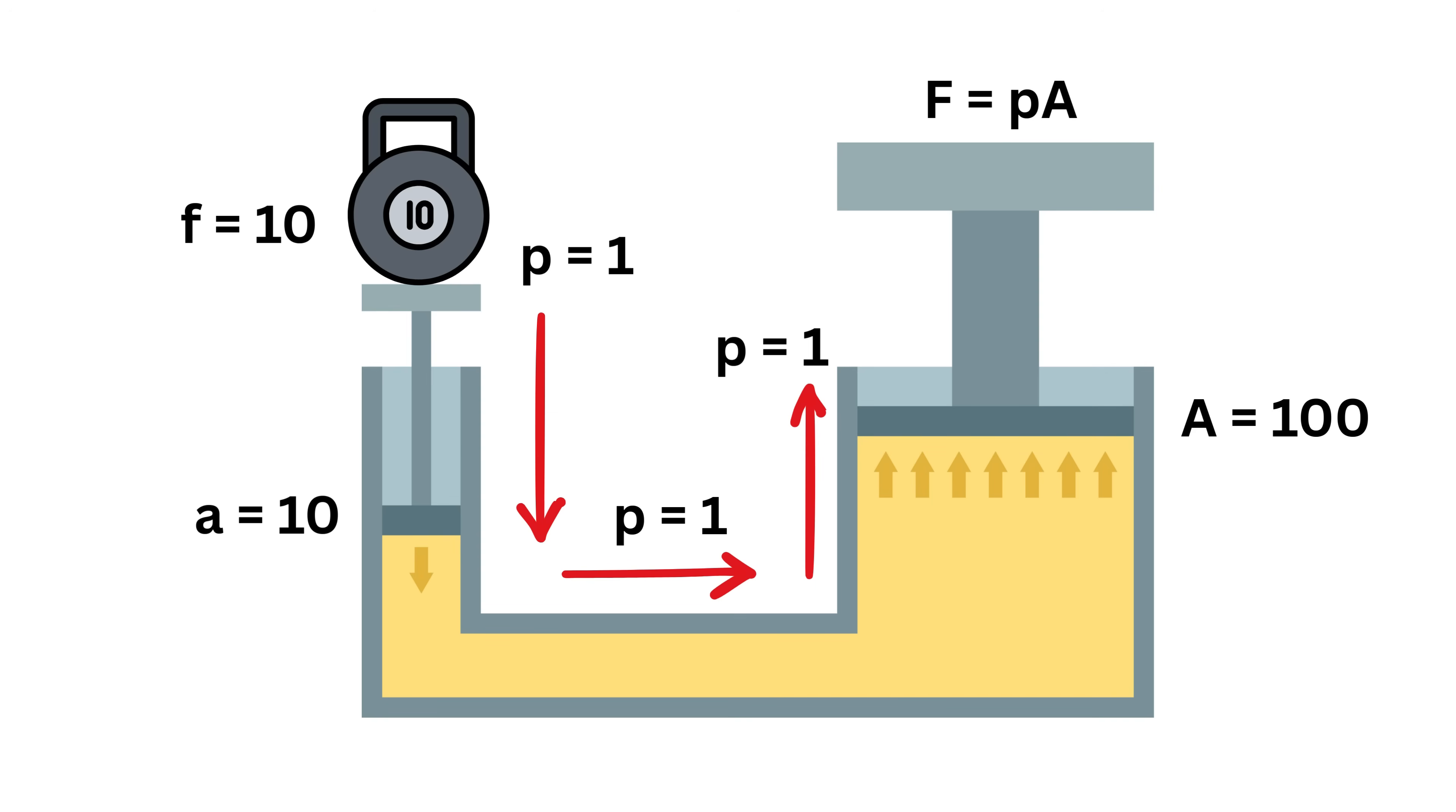When this pressure acts on the large piston, which has 10 times more area, it produces a force of 1 unit of pressure times 100 square units of area, or 100 units. So a force of 10 units applied at one place results in a force of 100 units at another place. Isn't this amazing?